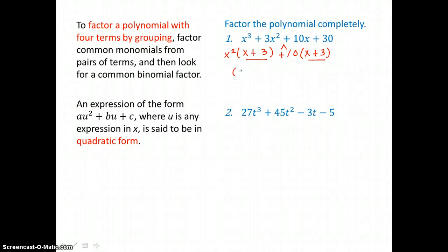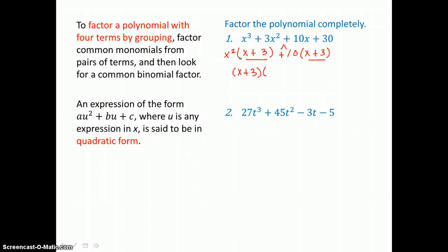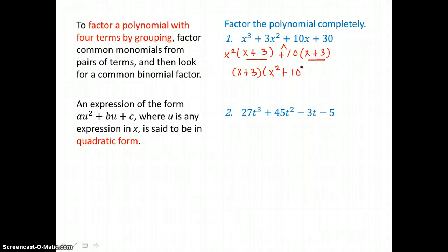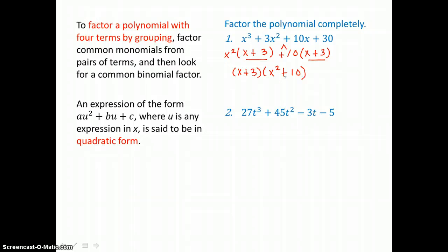Grouping works because both binomials are the same: x plus 3. So we factor x plus 3 out of the two terms we created, leaving the binomial x squared plus 10. Now x squared plus 10, even though it's of second degree, is not factorable further, so we're done factoring that polynomial in four terms.